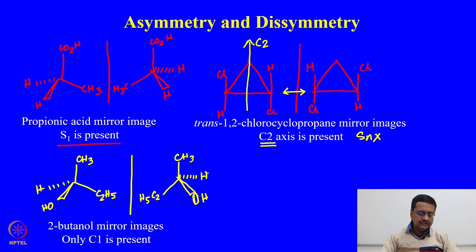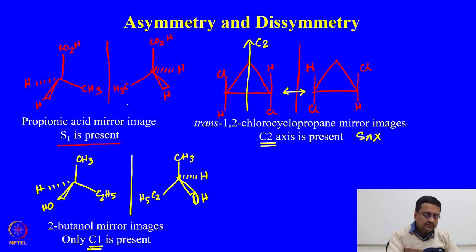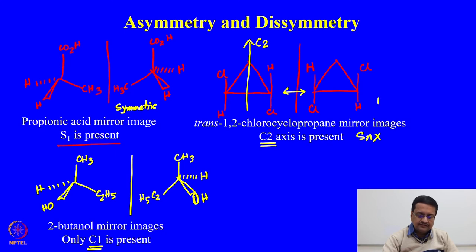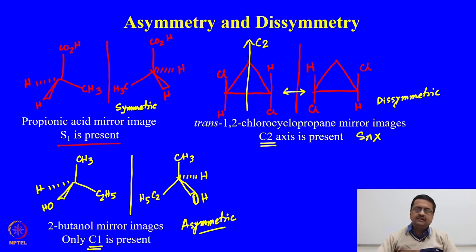The third case — 2-butanol and its mirror image — shows that this molecule has only C_1; there is no S_n and there is no other symmetry element like C_2 or C_3. The two mirror images are non-superimposable. Therefore this molecule is a chiral compound and optically active. So propionic acid is symmetric, trans-1,2-dichlorocyclopropane is disymmetric, and 2-butanol can be termed asymmetric. This illustrates the difference between symmetric, disymmetric, and asymmetric molecules.